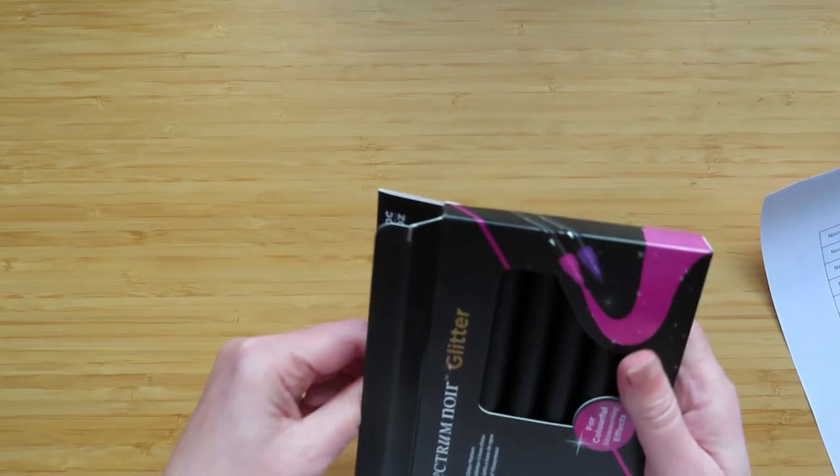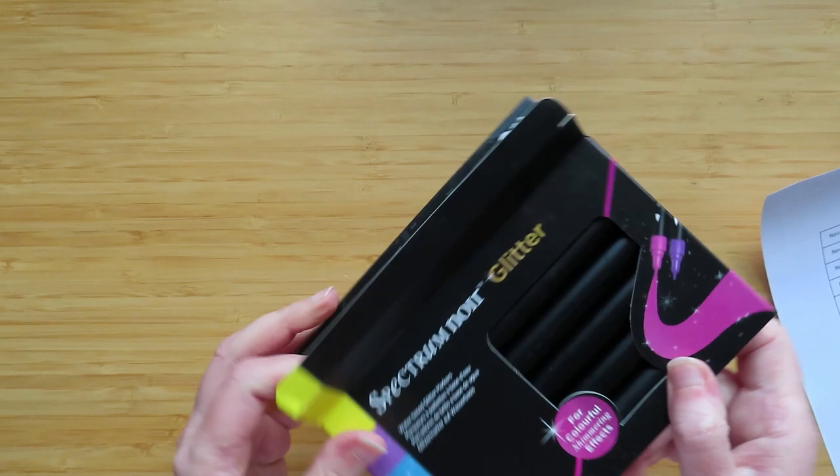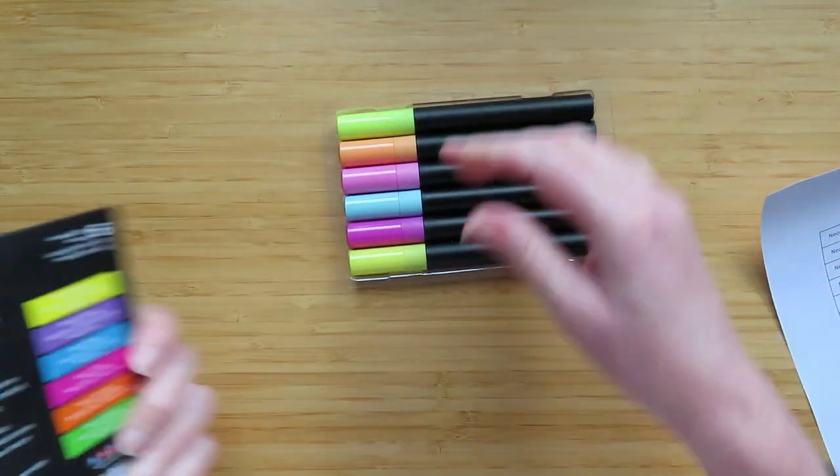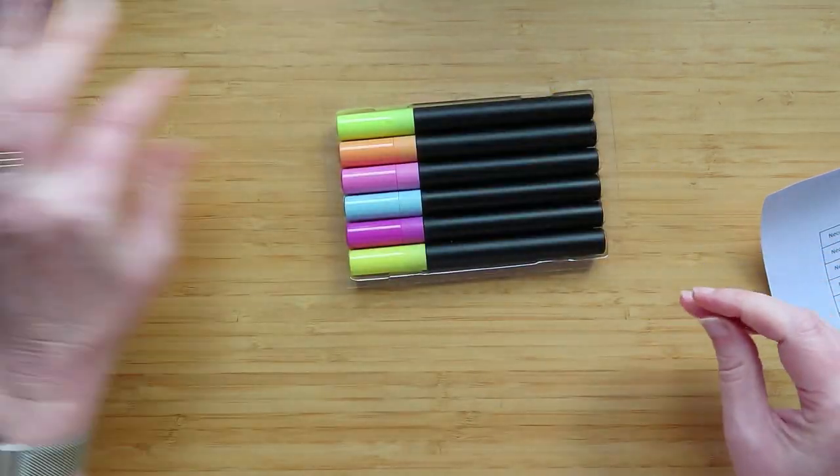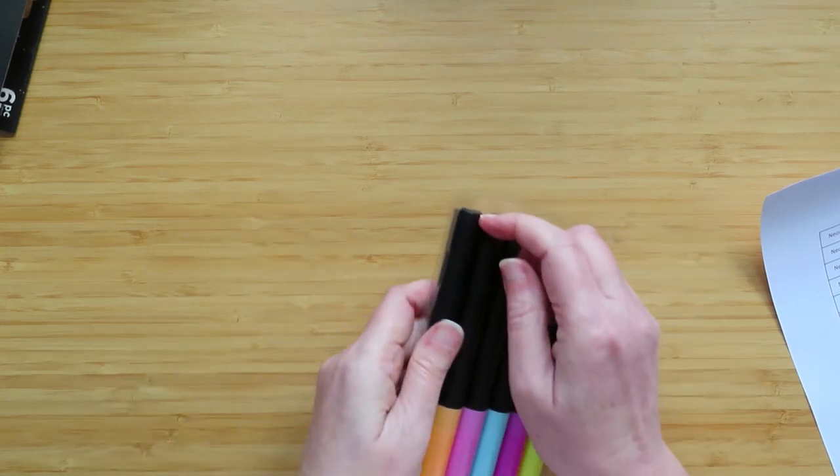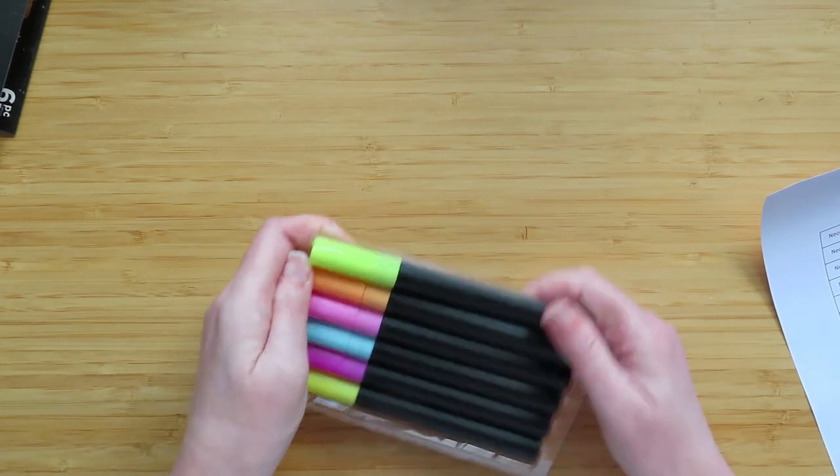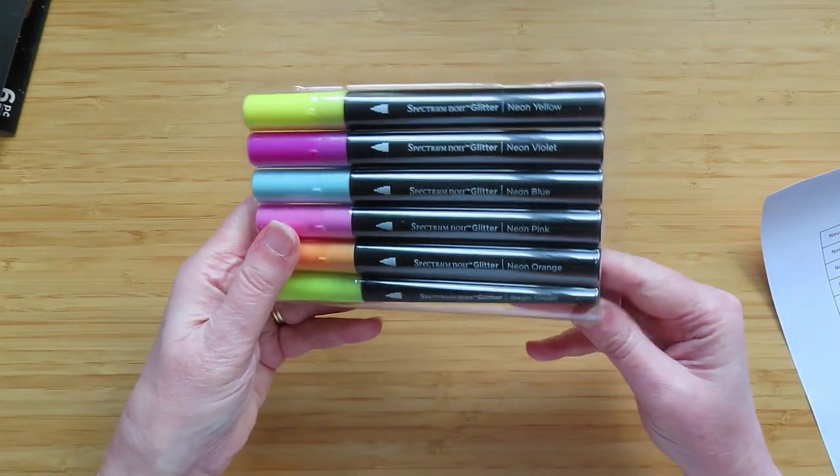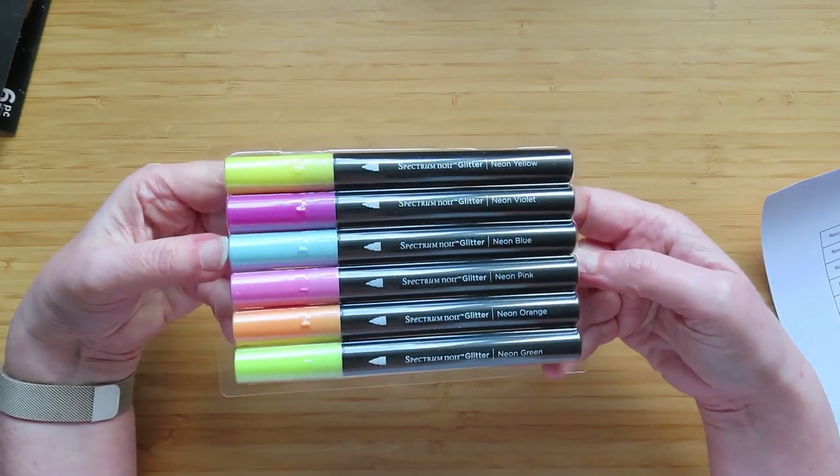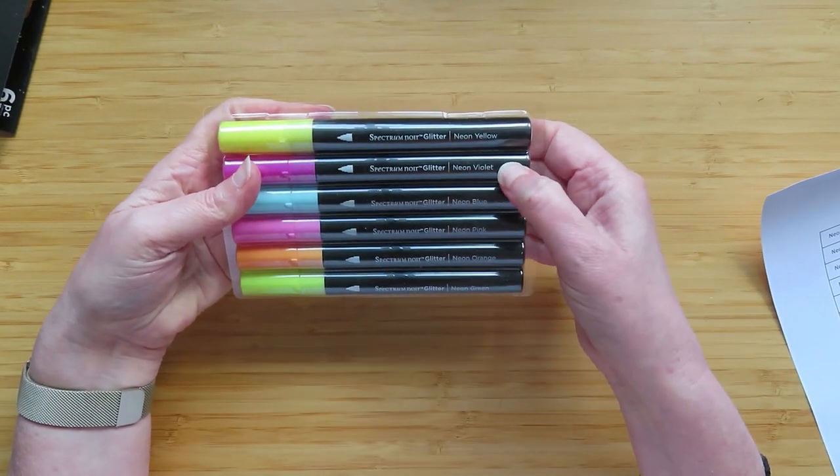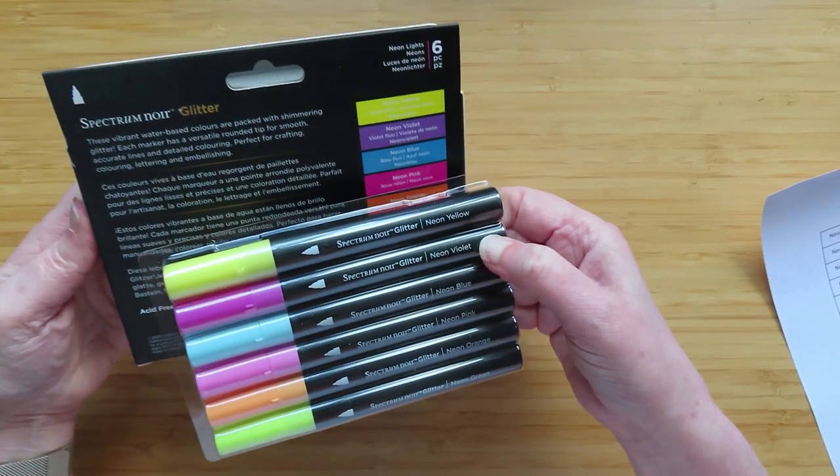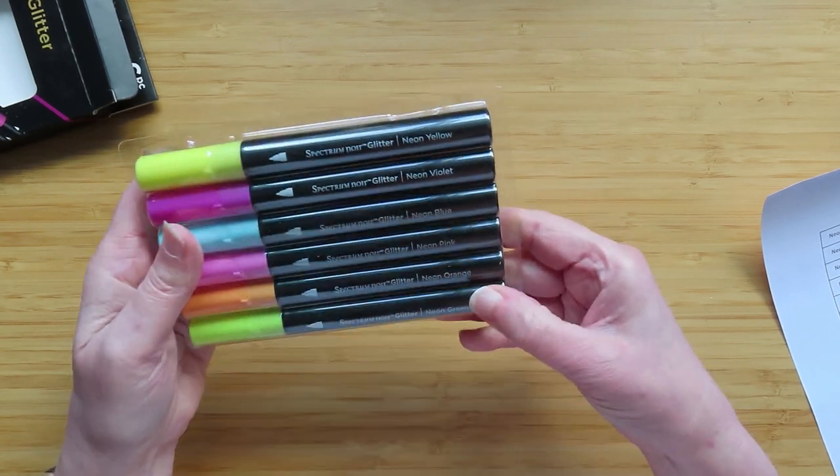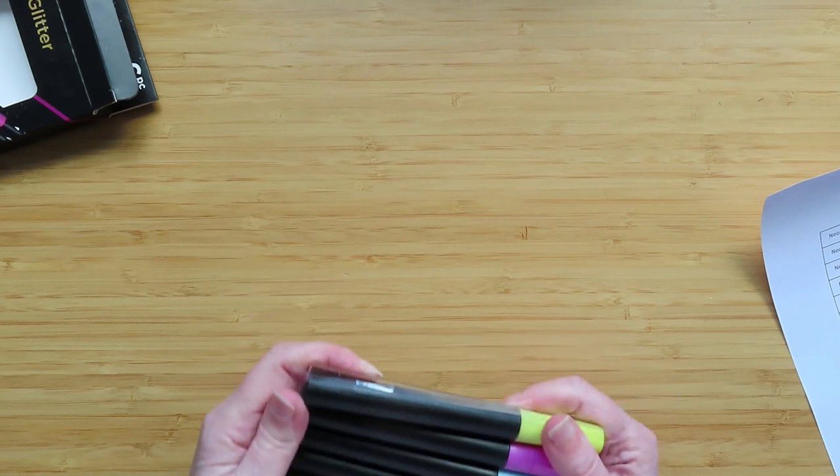They're extremely tightly packed. There we go. No instructions, which is what I said last time. There's no instructions about priming them, but they do have their names on them. So neon yellow, neon violet, neon blue, neon pink, neon orange, and neon green. Let's get them all out of here.